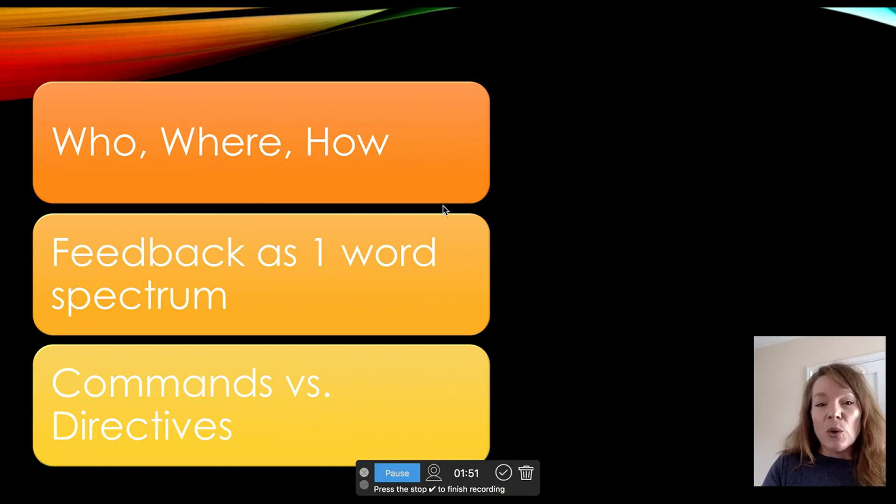When we get started, we waste a lot of time by trying to explain who's going to do what. Just answer three simple questions: who, where, and how. Who? Sopranos. Where? Measure seven. How? On solfege. And we go.